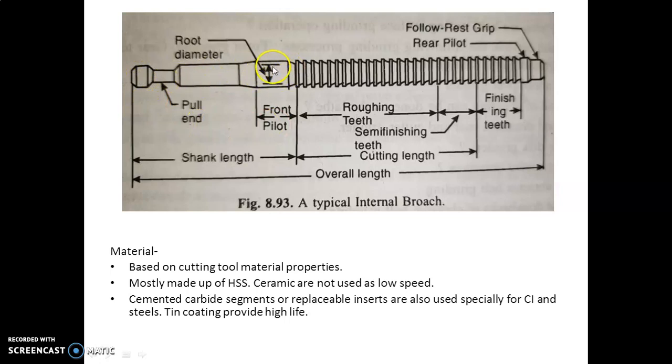Then this is the root diameter mentioned here. This is the pull end. Then this length is the overall length of the tool here. This is the roughing teeth, then it starts with the semi-finishing teeth, and lastly finishing teeth. So cutting length is represented.